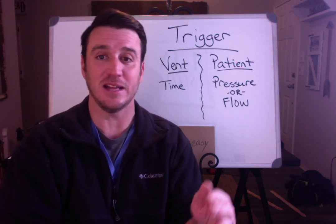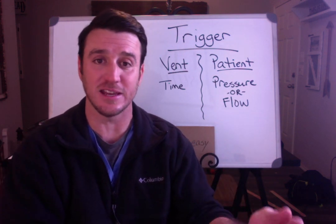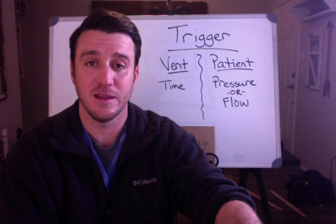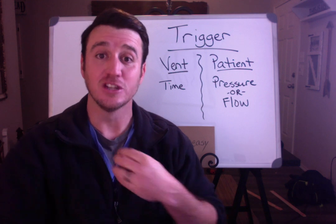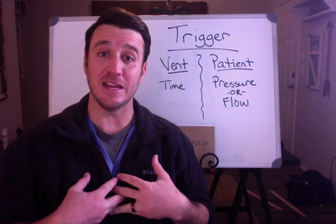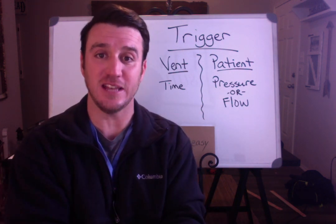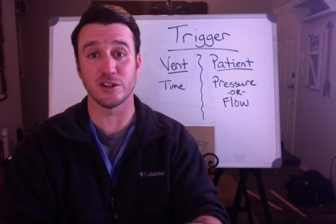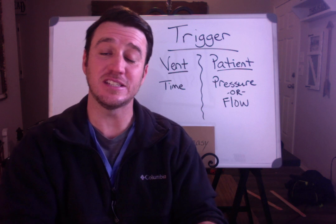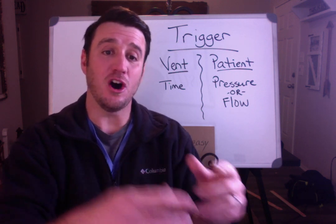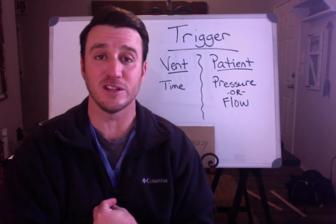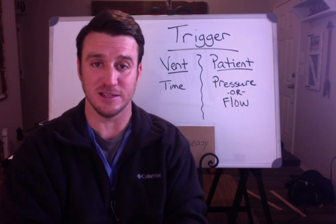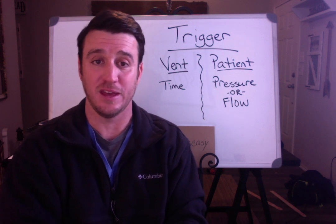This happens instantaneously — it's not something that lags. When flow is lost from the circuit, the vent immediately recognizes the patient is pulling flow out and allows them to breathe. If you're in AC volume, it will give the set tidal volume at the set flow. If you're in AC pressure, it will give the set pressure at the set inspiratory time. If you're in SIMV or CPAP, the patient gets a spontaneous breath.